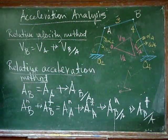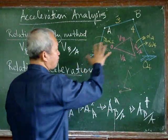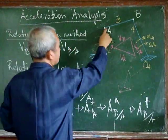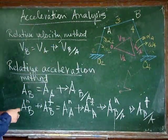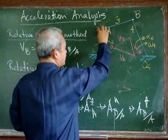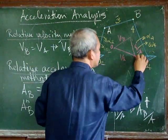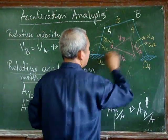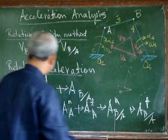In the relative velocity method, we have a certain equation where the velocity of B equals the velocity of A plus the relative velocity of B with respect to A. We draw the velocity polygon: the velocity of A is perpendicular to link 2, the relative velocity of B with respect to A is drawn perpendicular to AB, and we know the direction of the velocity of B.